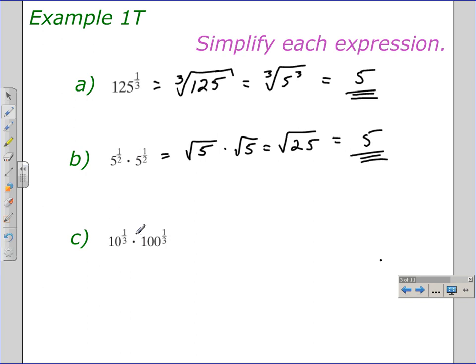In this particular example, example C, where you have 10 to the 1 third power times 100 to the 1 third power, we'll convert those to radical form first. That'll give us the cube root of 10 times the cube root of 100. We can't take the cube root of either of those numbers, but when we multiply these together, since they have the same index, we can do that. That'll give us the cube root of 1,000. And because the cube root of 1,000 can be written as the cube root of 10 to the 3rd, this simplifies to 10.